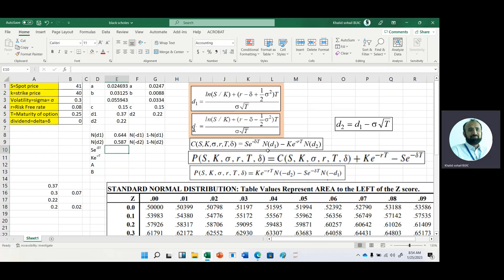Now we have N(d1) and N(d2). We need S times e raised to the power minus delta T. Here we have S, which is 41, multiplied by exponent of minus delta 0 multiplied by time period 0.25. Then we have minus K times e raised to the power minus rT. Here K is 40. We are finding its present value multiplied by exponent of minus rT, where the risk-free rate is 0.08 multiplied by time period 0.25. This is part A and this is part B.